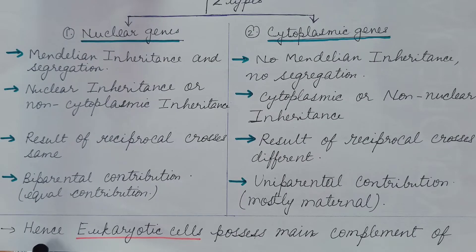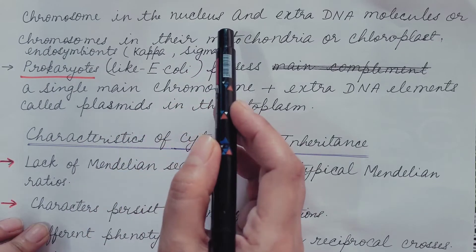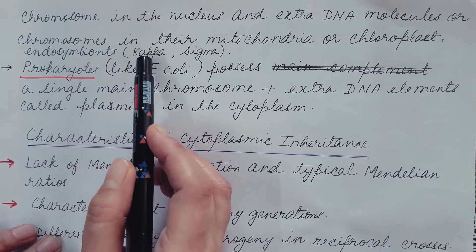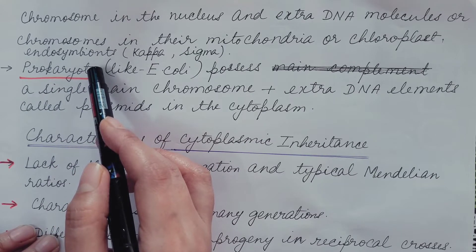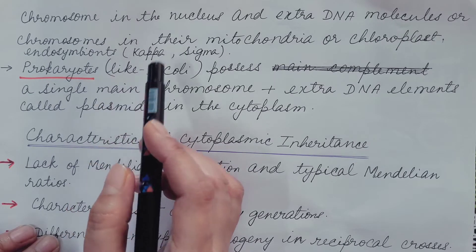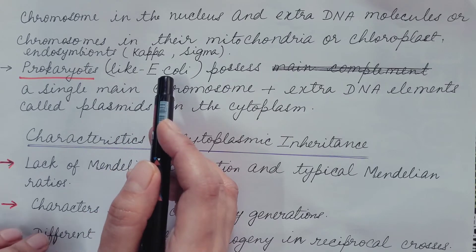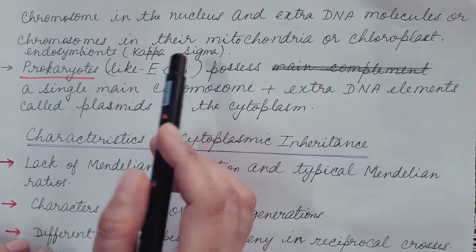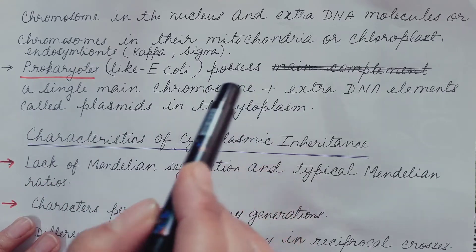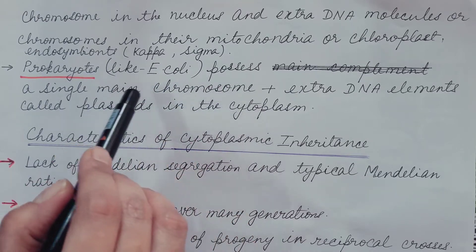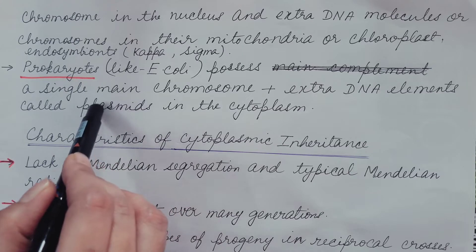Eukaryotic cells possess the main complement of chromosomes in the nucleus as nuclear genes, and extra DNA molecules or chromosomes are present in mitochondria or chloroplasts, and in some cases endosymbionts. Endosymbionts are organisms that live within the body or cells of another organism with mutual benefit — examples include kappa particles and sigma particles. In prokaryotes like E. coli, there is a single main chromosome present in the nucleoid, plus extra DNA elements in the cytoplasm known as plasmids.